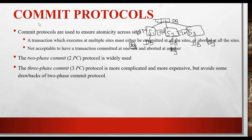Out of the ACID properties, only the atomicity property is being ensured in your commit protocol. There are two types of commit protocol: two-phase commit and three-phase commit. We are not going to concentrate much on three-phase commit because it is complicated and expensive, although it addresses the drawbacks of two-phase commit. In university exams you will mainly get two-phase commit protocol questions, so we will concentrate on that.